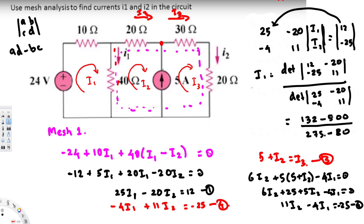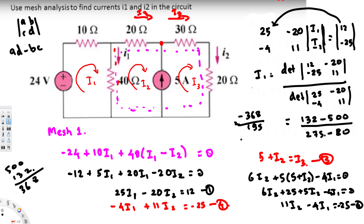The numerator is 132 minus 500 = negative 368. So i1 equals negative 368 divided by 195, which gives i1 = negative 1.89 amperes. This is our first answer.